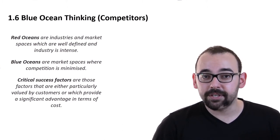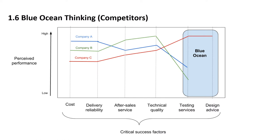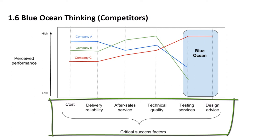Let's say that we are able to define a couple of these critical success factors and we can put them on the horizontal axis in the graph. Let's say it can be cost, delivery reliability, after-sales service, technical quality, testing services, and design advice. These are critical success factors as valued by our customers.